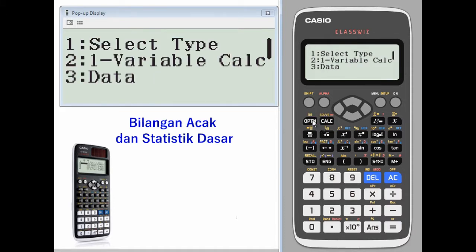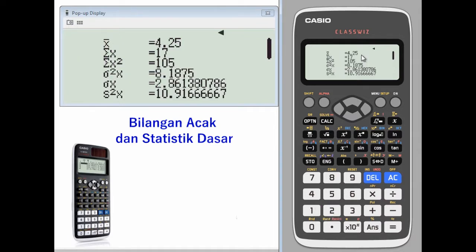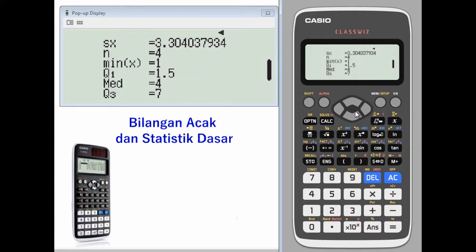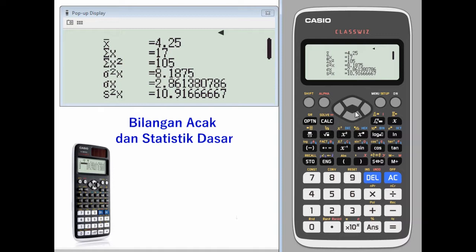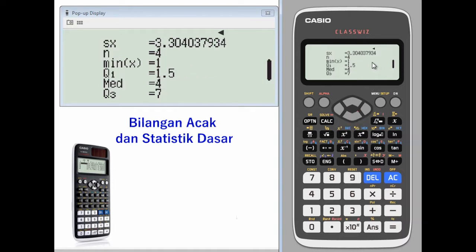Press option number two to calculate. You have the mean, the sum, the sum of the squares, the variance, standard deviation, minimum, number of values, and median.